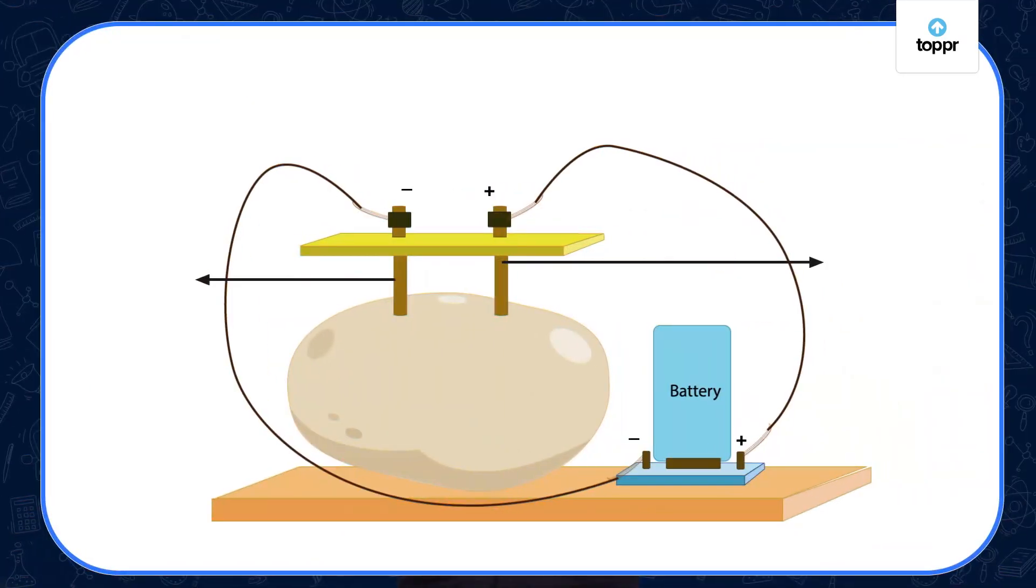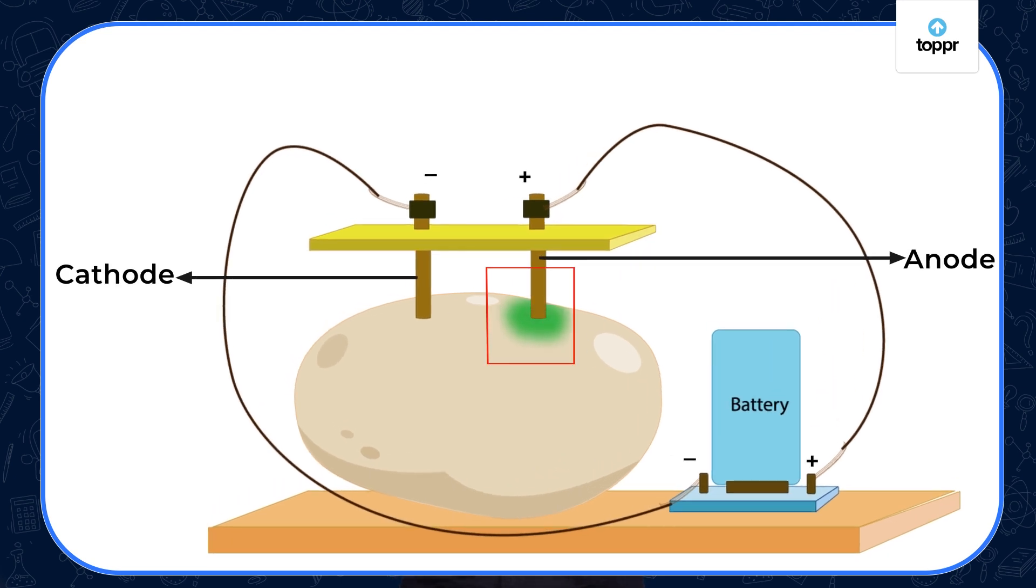You can try other experiments as well. For example, take a potato instead of a salt solution. Attach two carbon rods inside it and connect it to a battery. After some time, you will observe a greenish blue spot near the anode, the rod which is attached to the positive side of the battery.